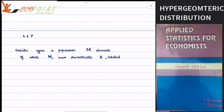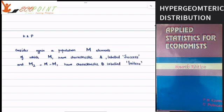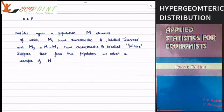Consider again a population of capital M elements, of which M1 have characteristic A, labeled success, and M2 equals M minus M1 have characteristic B, labeled failure. Suppose that from this population, we select a sample of capital N elements without replacement.